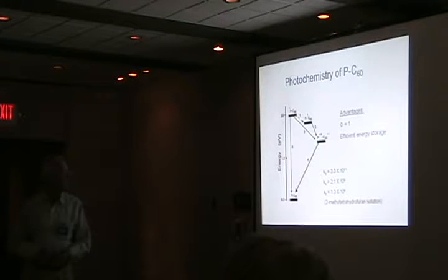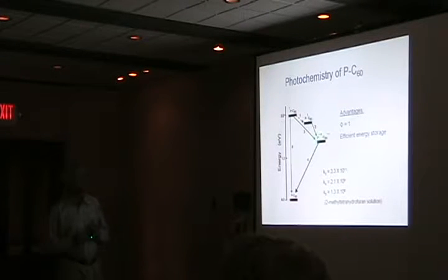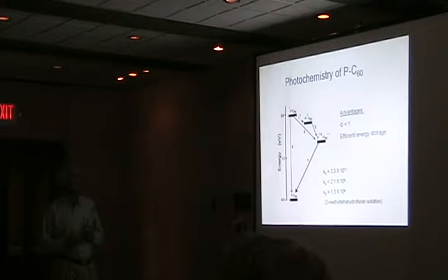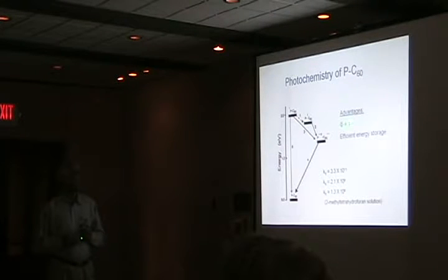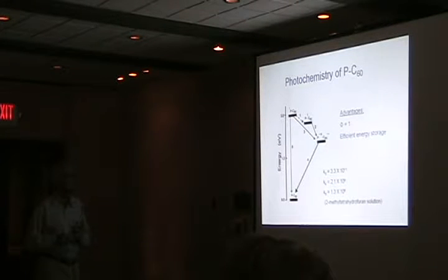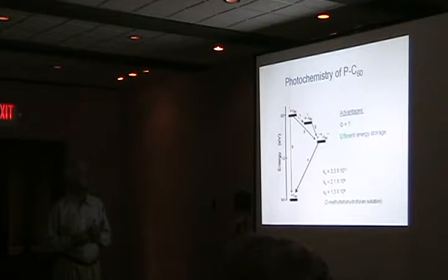We can estimate the energies of these states electrochemically, measuring the redox potentials of the donor and the reduction potential of the acceptor, and use those to draw energy diagrams. For this dyad, we see that it has a very high quantum yield — every photon gives rise to charge separation, just like in natural photosynthesis — and a reasonable amount of the photon energy is stored as charge separation.